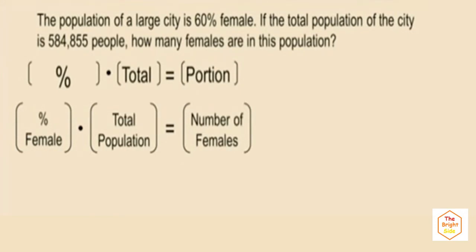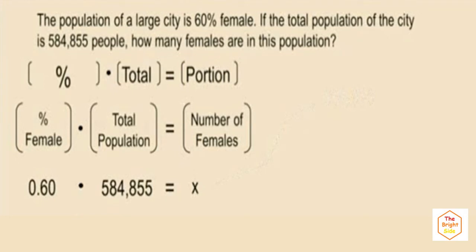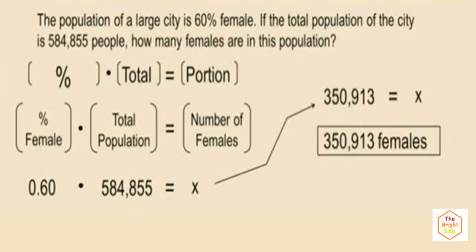Our percentage is 60 percent. In equations, we represent percents as decimals or fractions. To change 60 percent to a decimal, we move the decimal two places to the left, giving us 0.60. So our equation is 0.60 times 584,855 equals x. Multiplying gives us 350,913. So there are 350,913 females in the total population.